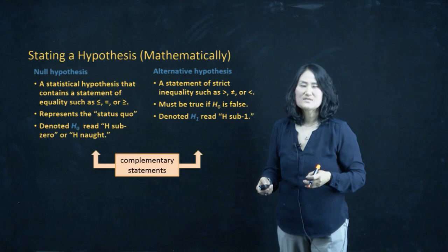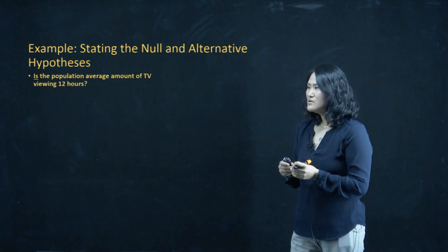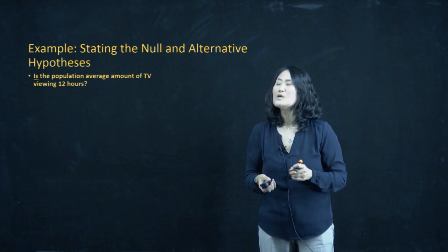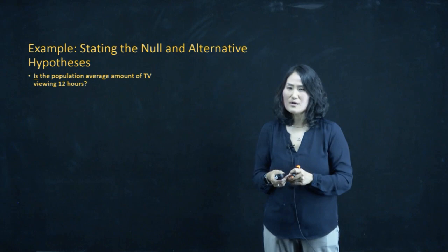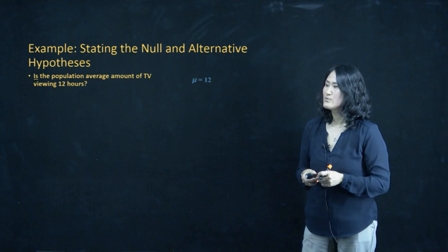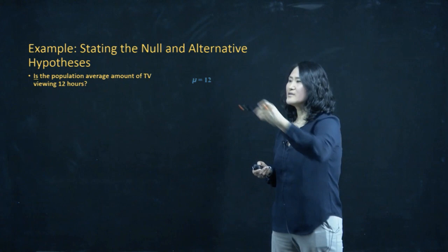In this first example, the key word is 'is' — the population average amount of TV viewing is 12 hours. So 'is' is important and 12 is important. The claim refers to the population mean mu, so we write: mu equals 12. Because we have the equality sign, that goes with H0.